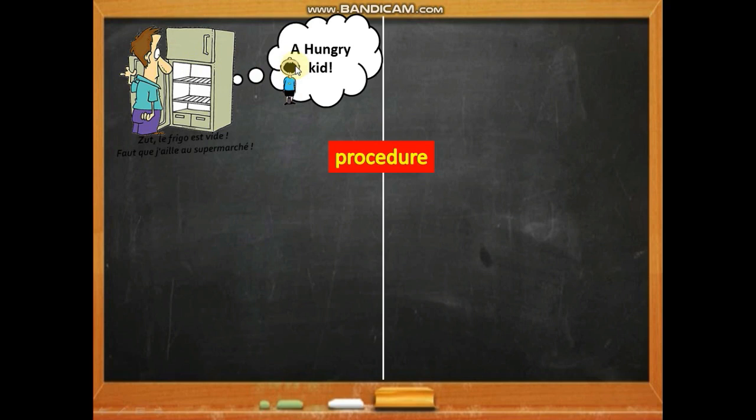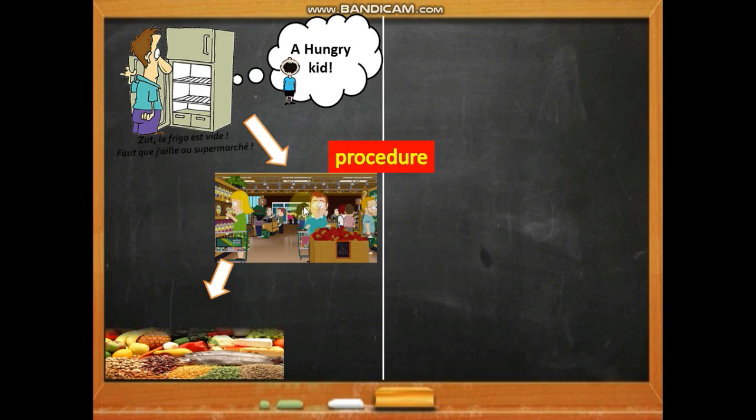A father tells his kid he wants a burger. He opens the refrigerator and there is nothing. So what do we need to do? We need to go to the supermarket and buy what we need — just like gathering what you need to write a paragraph.